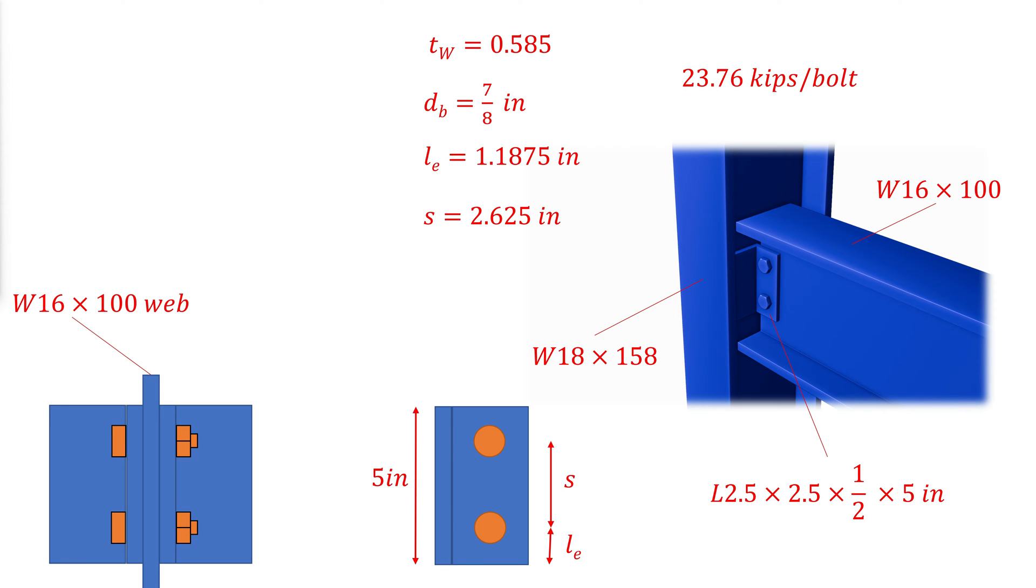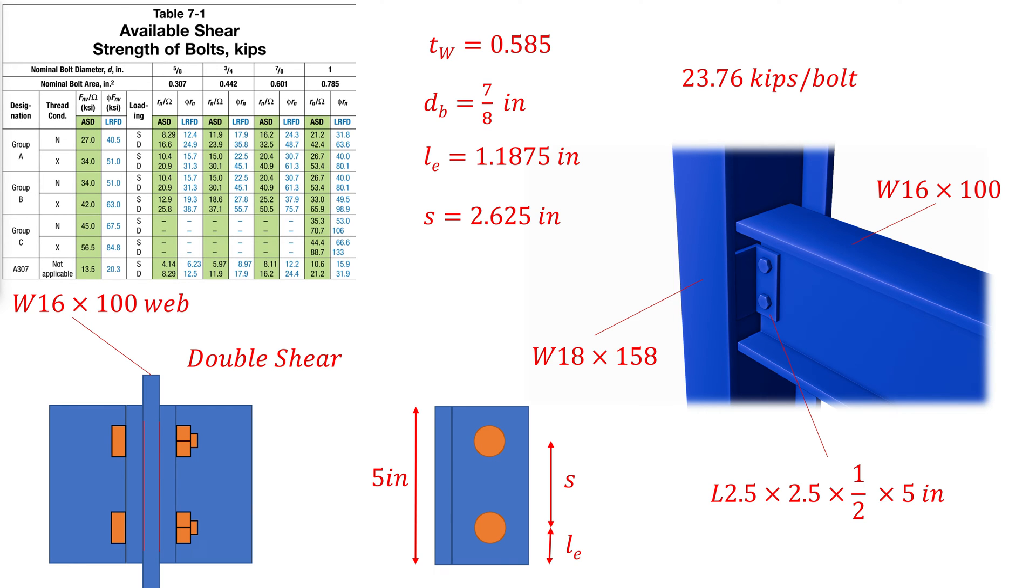Because there is an angle on both sides of the web, there are two planes for shear. In other words, the bolts are in double shear. To determine the strength of the bolts in shear, we refer to table 7-1 of the AISC construction manual. Because at least one of the planes of shear will include the bolt thread, we choose thread condition N. And because the bolt is in double shear, we choose the loading condition D. And the column chosen will be the one under the bolt size 7/8 inches. We are using the LRFD design method and thus, the strength of the bolt in shear is 48.7 kips.